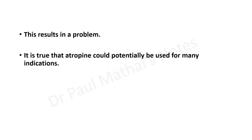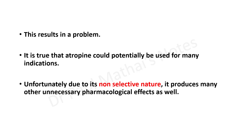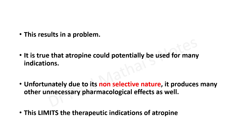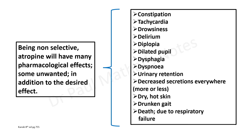This non-selectivity presents a challenge. Although atropine could potentially be used for many indications, since it is non-selective it produces many unnecessary pharmacological effects as well, which limits its therapeutic indications. All the anticholinergic effects described earlier will be produced by atropine, and many of these will be unwanted.